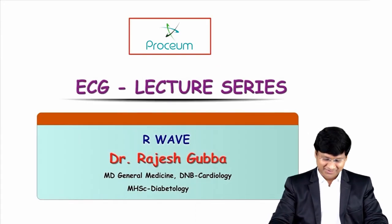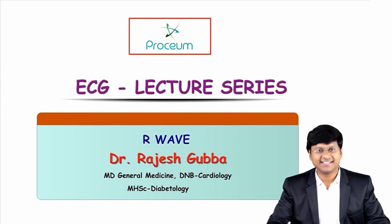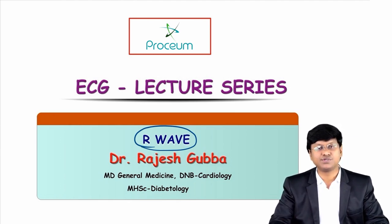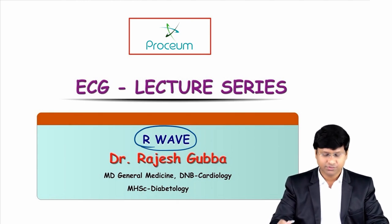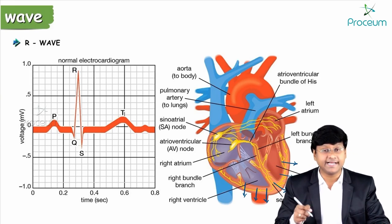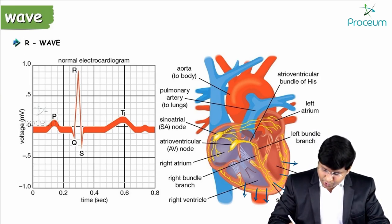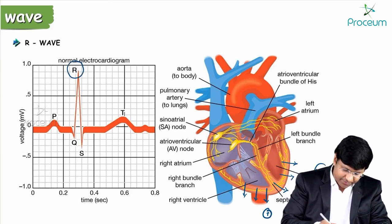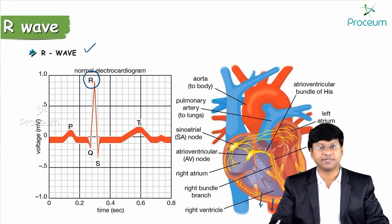Hello everyone. As a continuation of the ECG lecture series, in this session I will be discussing abnormalities of the R wave. The R wave is a positive wave which appears after the Q wave in the QRS complex, and this R wave is due to ventricular wall depolarization. The direction of ventricular wall depolarization is towards the electrode, and when the wave of depolarization is towards the electrode, you will have a positive complex — that is nothing but your R wave.